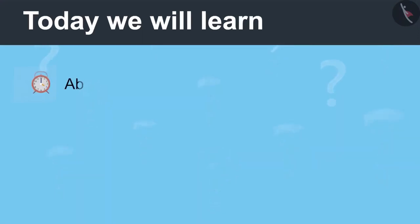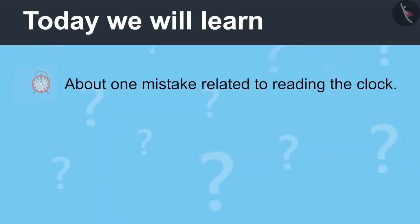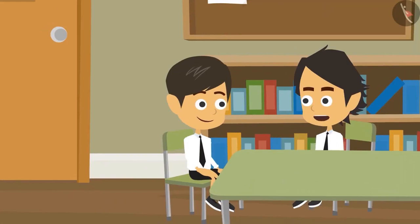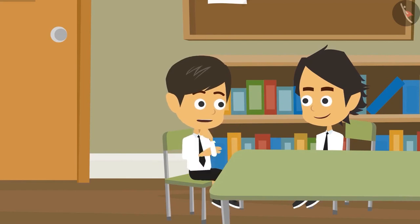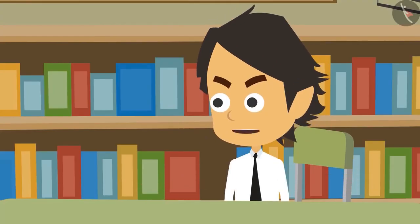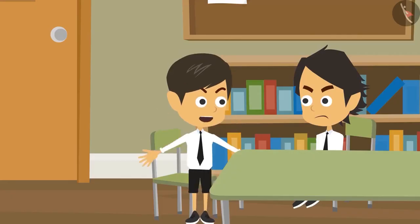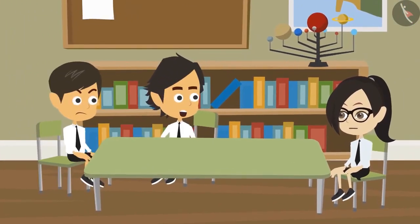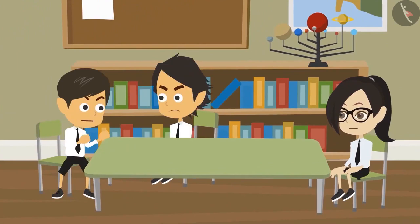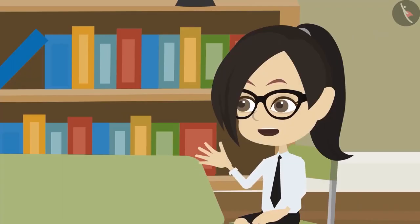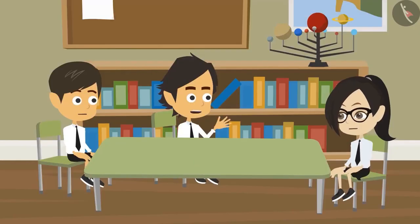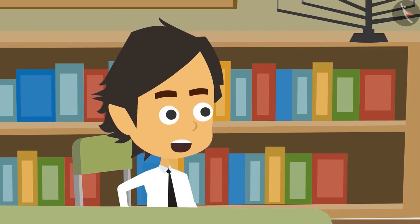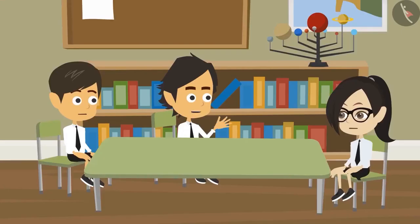Today we will learn about one mistake related to reading the clock. Riyansh says he reaches school in 2 minutes from home; Ayushman says it takes 10 minutes, and they both reach at the same time. Riyansh explains: he leaves home at 9 o'clock and reaches when the minute hand is at 2, so he thinks it is 2 minutes.